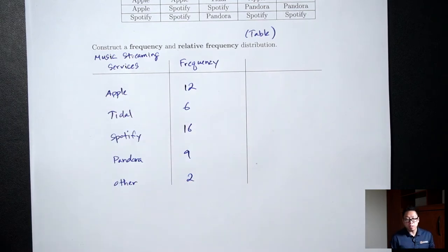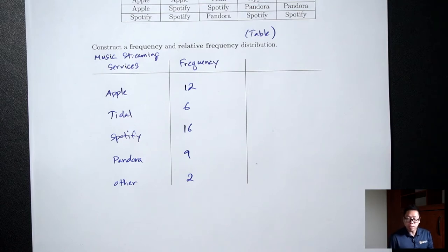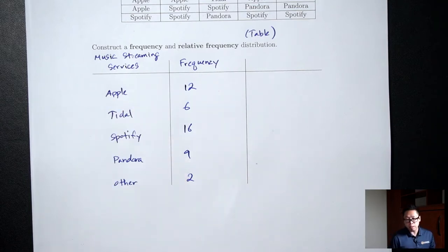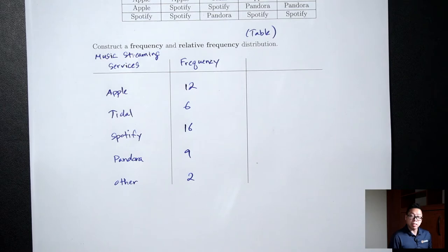Now, we know the 12 means 12 people said Apple was their favorite. The question we often ask is: what percent is this? So what percent said Apple was their favorite? That's called a relative frequency.